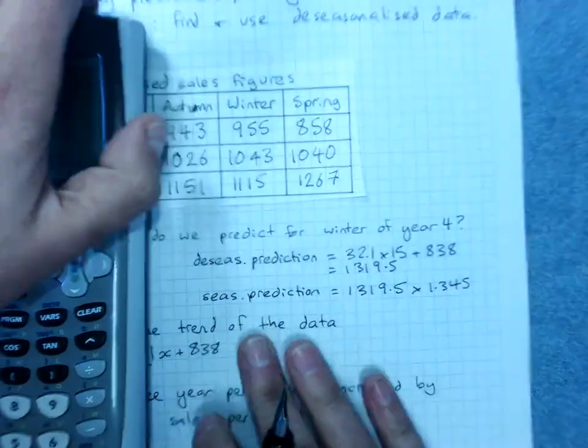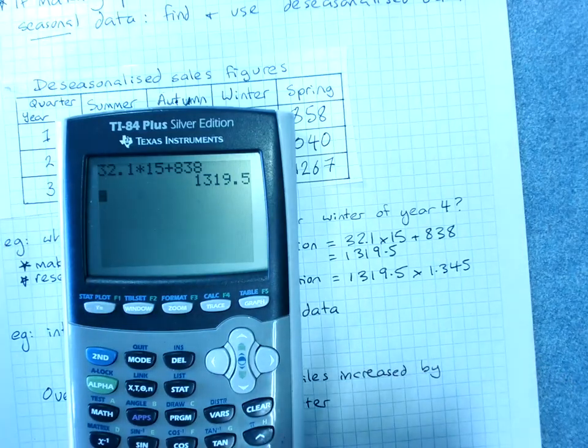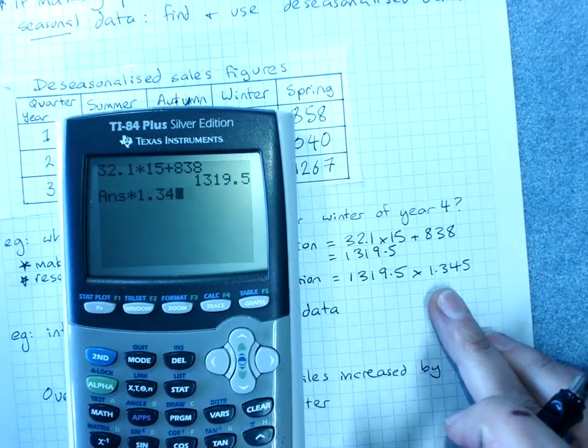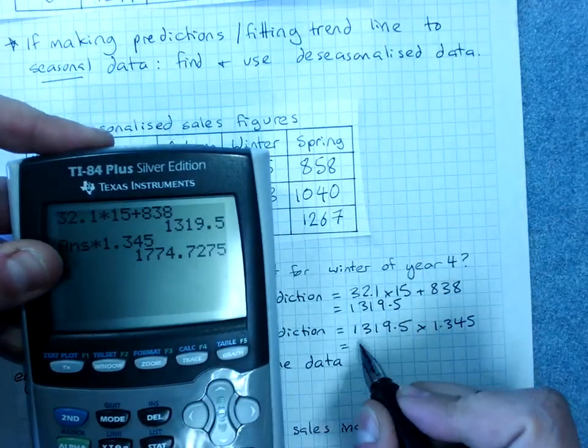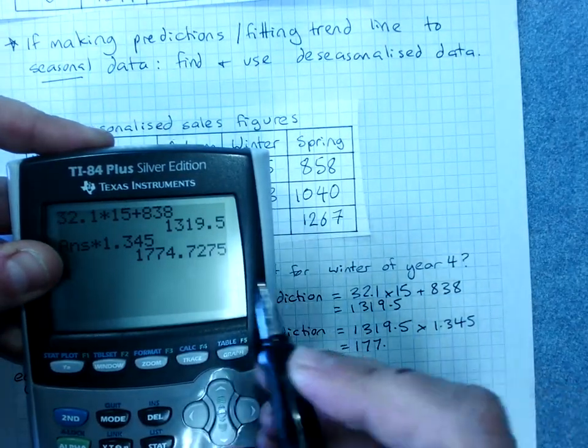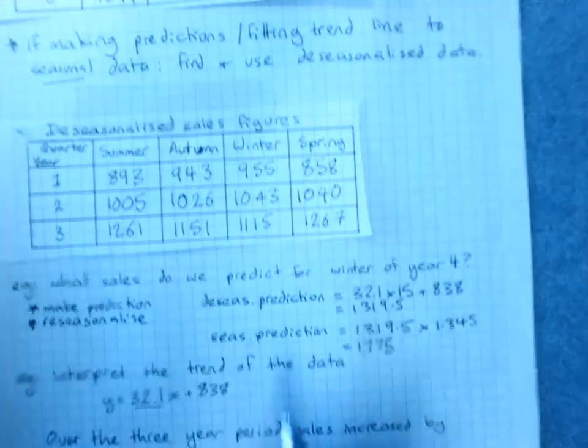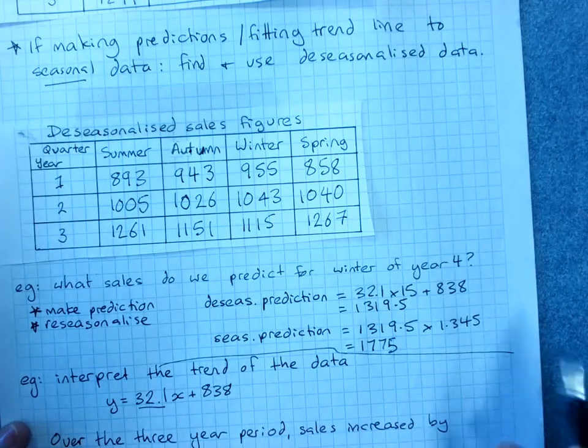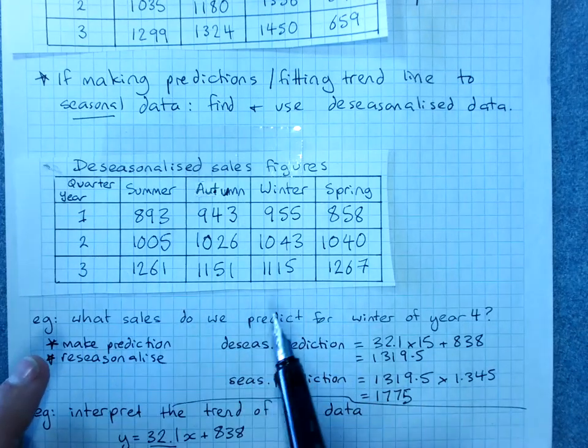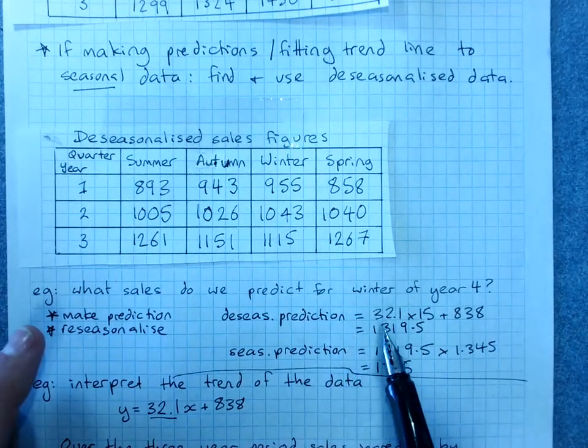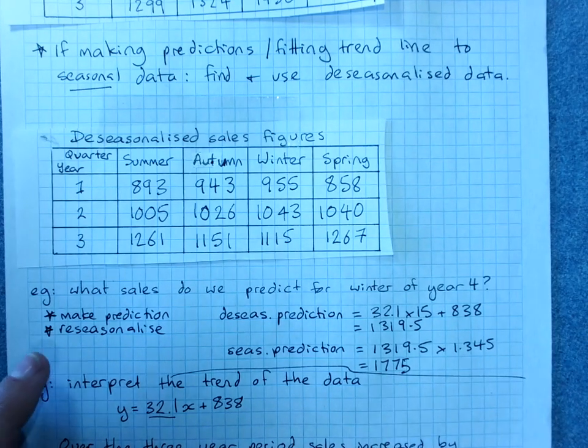That's already in there, times 1.345. That gives us 1775. So if you're making a prediction, you use your de-seasonalized trend line to get a de-seasonalized prediction, and then re-seasonalize your number.